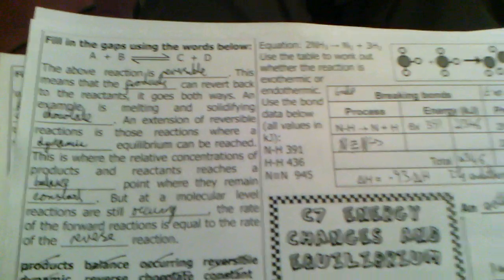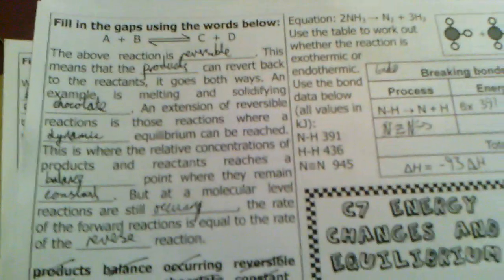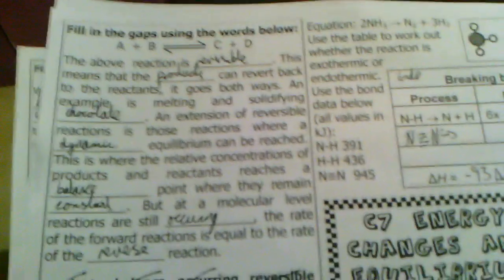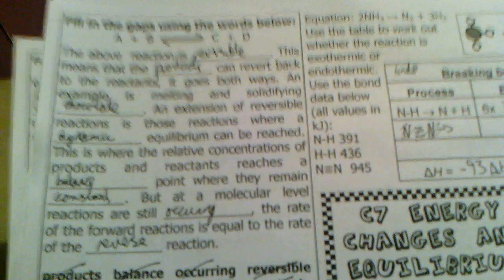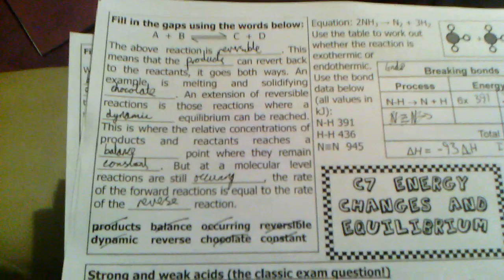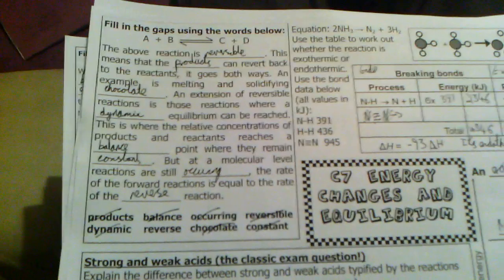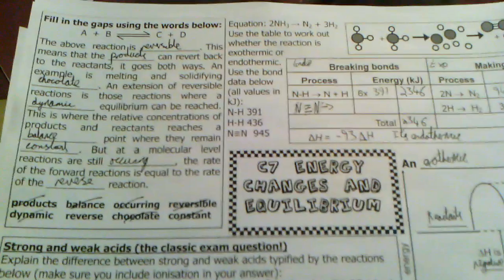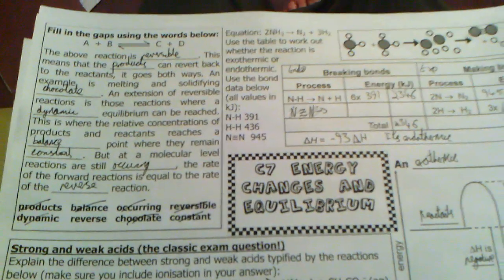So, dynamic equilibrium and reversible reactions are the thing that comes up a lot. A reversible reaction is basically when the products can be turned back into the reactants, and the reactants can be turned into a product. Well, that's dynamic equilibrium, in a way. Dynamic equilibrium is when the reactants and products keep going back and forth. So, the overall result is just nil, because no products are created and no reactants are created.